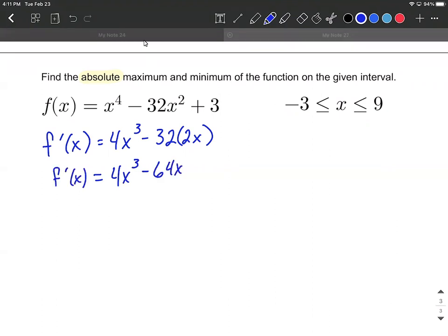And now to get the critical values or critical numbers, what we want to do is figure out when does either the derivative equal zero or when would it be undefined? So since this is a polynomial for our first derivative, it's not going to be undefined anywhere. But let's go ahead and set it equal to zero and solve down. Figure out when does it equal zero.